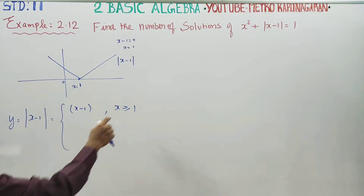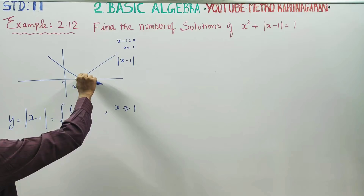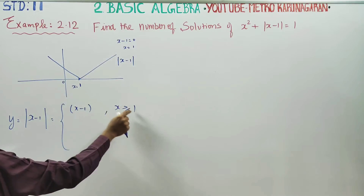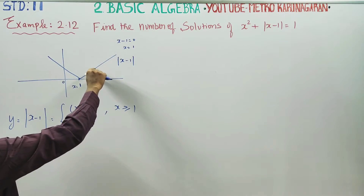For x equals 2, putting in: 2 minus 1 equals 1. So the value is 1 at x equals 2, and 2 minus 1 equals 1.